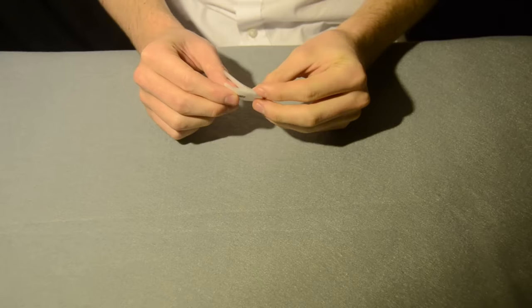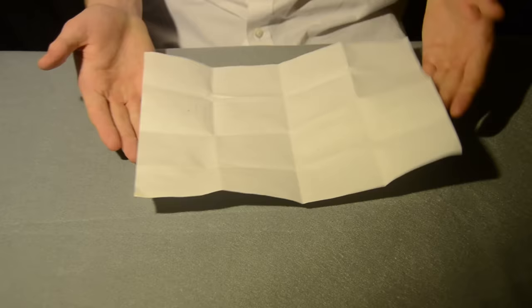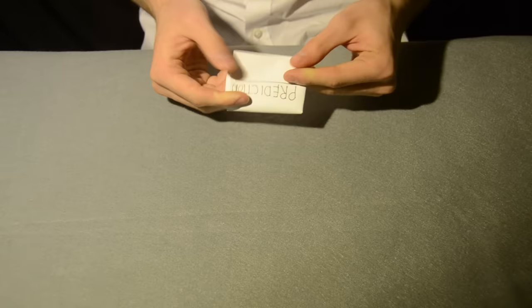This is a very easy trick to perform, since it's practically self-working. Write except for the ace of spades on a small bit of paper and fold it up. Then take a piece of paper and fold it 4 times, as shown.